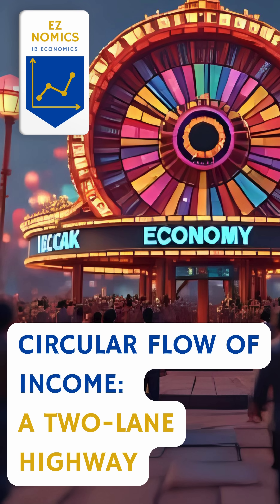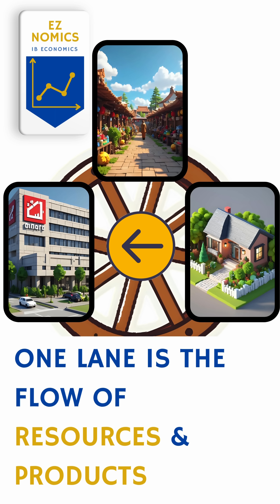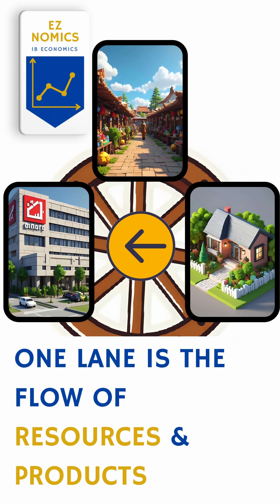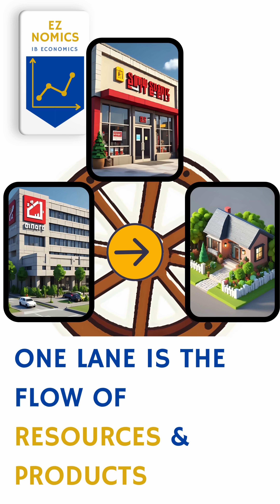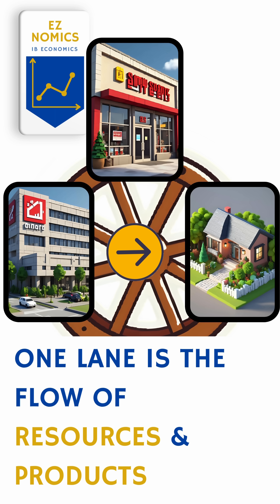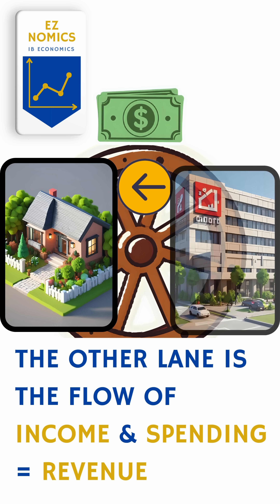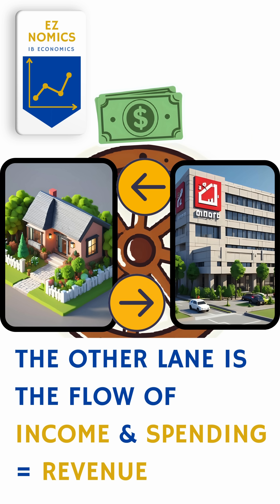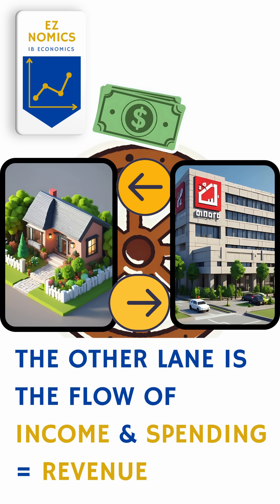You can now think of the circular flow as a two-lane highway. One lane is the flow of resources from households to firms, and the flow of products from firms to households. The other lane is money flow — the flow of income from firms to households, and the flow of consumer spending from households to firms.